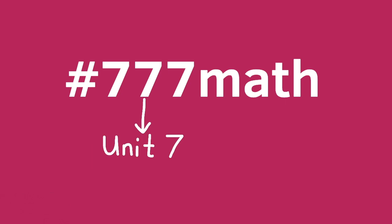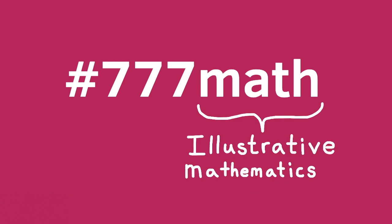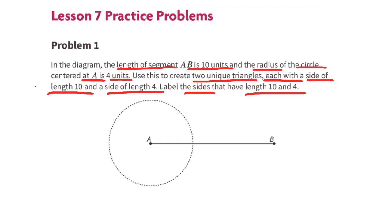7th grade unit 7 lesson 7: building polygons part 2, illustrative mathematics. Problem number 1: in the diagram, the length of segment AB is 10 units and the radius of the circle centered at A is 4 units. Use this to create two unique triangles, each with a side length of 10 and a side length of 4. Label the sides that have the length of 10 and 4.